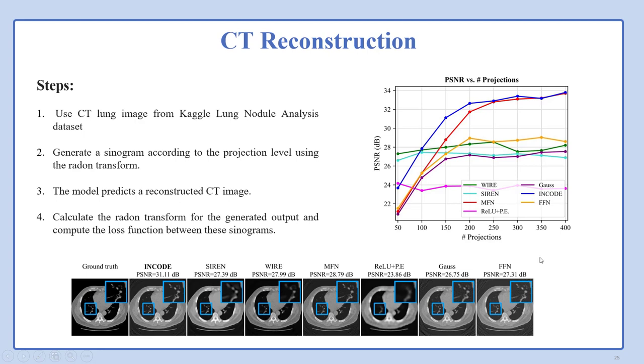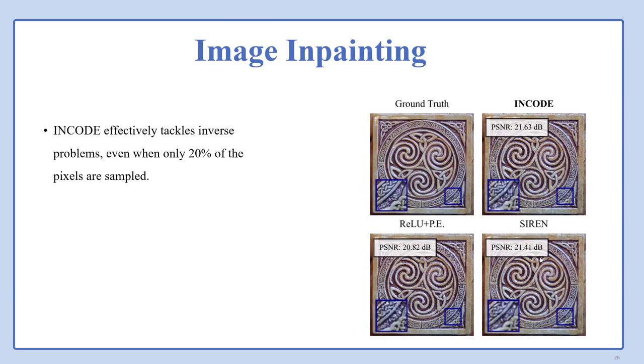ENCODE excels in handling the challenges of sparse data by integrating deep prior information in CT reconstruction. It produces sharp and detailed reconstructions with a significant improvement in PSNR compared to alternative methods, even in cases with limited measurements. We follow four steps: We use CT lung images from Kaggle, generate a sinogram according to the projection level using the Radon transform, the model predicts a reconstructed CT image, and we calculate the Radon transform for the generated output and compute the loss function between these sinograms.